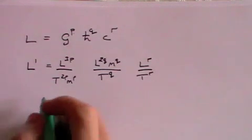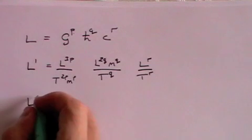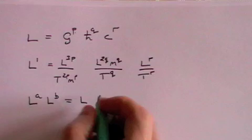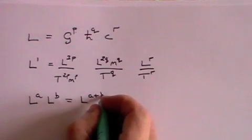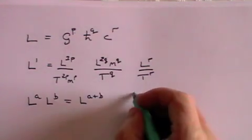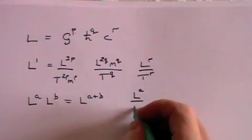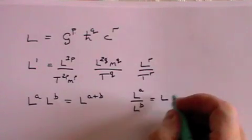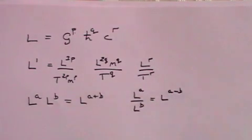Now I remind you that if you have something like l to the power a times l to the power b, that is one and the same as l to the a plus b. Similarly, if you have l to the power a divided by l to the power b, that is l to the a minus b.